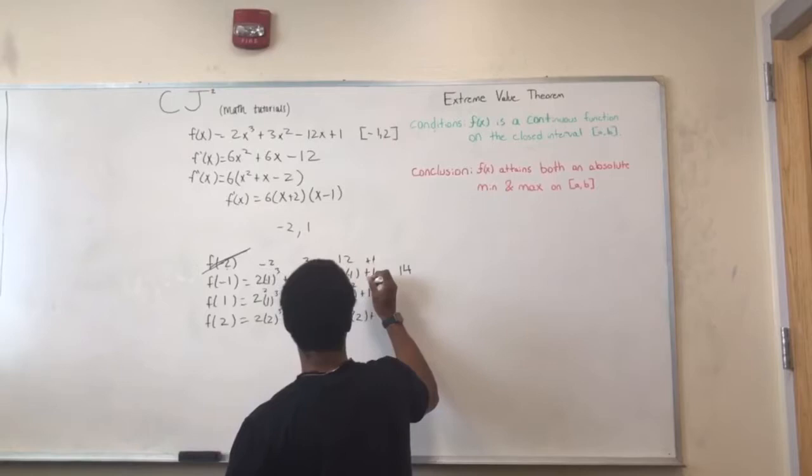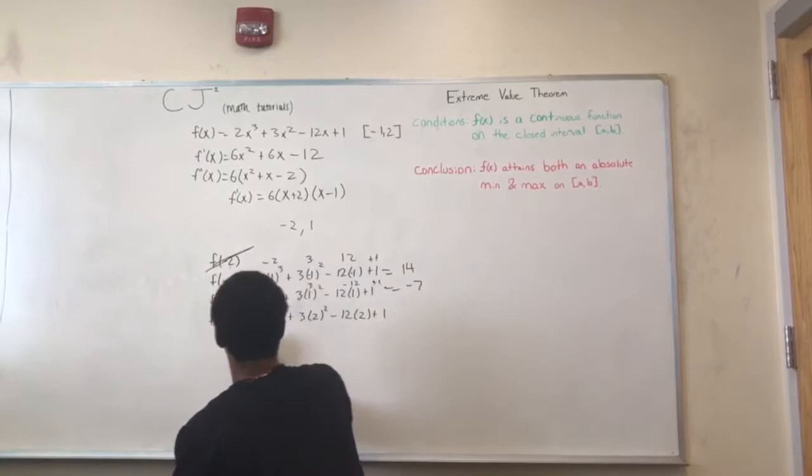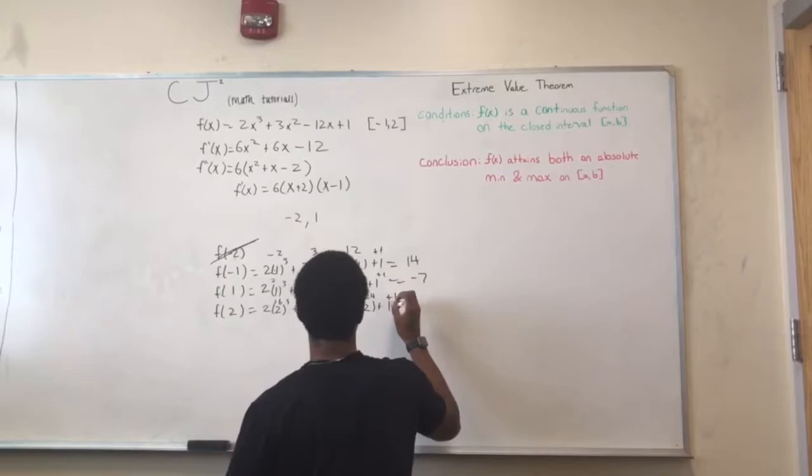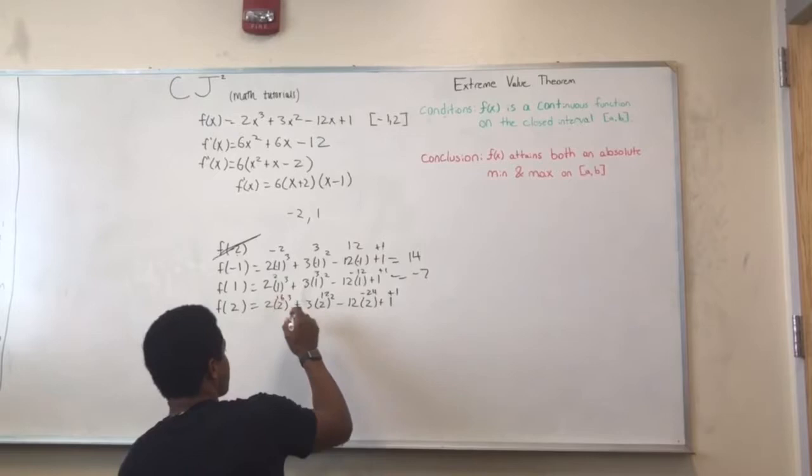And then for F of 2, you'll get 16, 12, negative 24, plus 1. And when you get that, you'll get negative 12 plus 16, which will equal to 4.